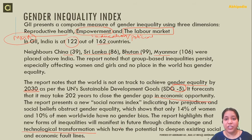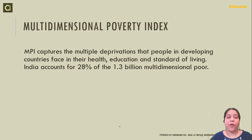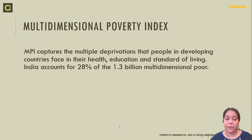Climate change impacts will be more severe on women — conditions like drought mean women have to travel further to fetch water, leading to higher school dropout rates as girls take on domestic work. This is why we need to work towards gender equality. The Multidimensional Poverty Index captures the multiple deprivations that people in developing countries face in health, education, and standard of living. India accounts for about 28% of 1.3 billion multi-dimensionally poor people.